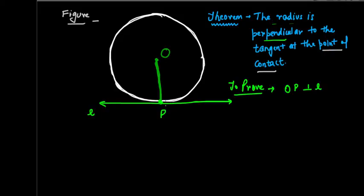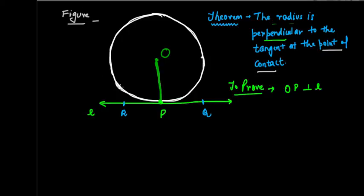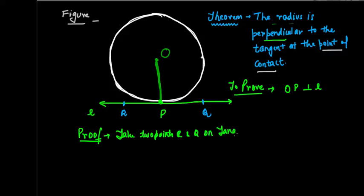To prove this, we take some points on the tangent. Suppose we take point R and point Q on the tangent. Let's take two points R and Q on tangent L. We need to prove that OP is perpendicular to L, and we have taken two points R and Q on the tangent.